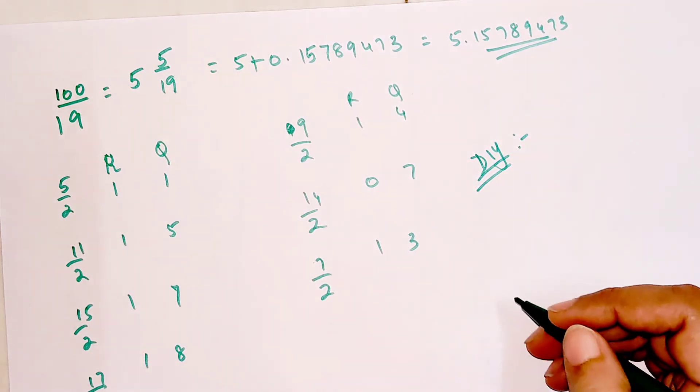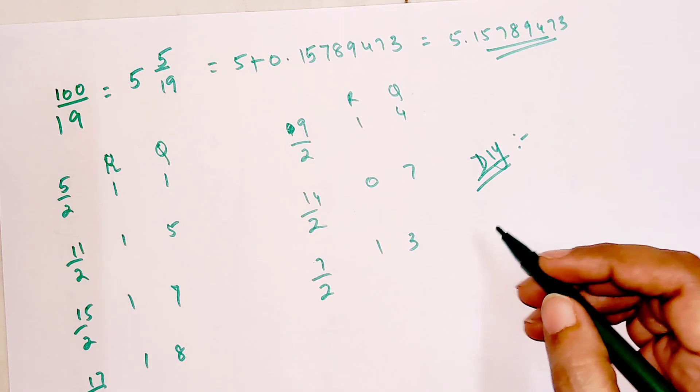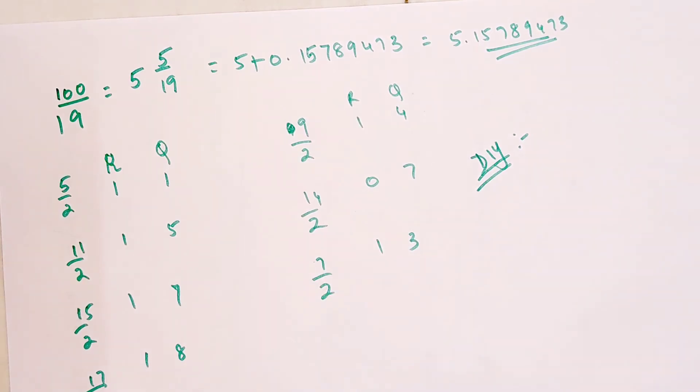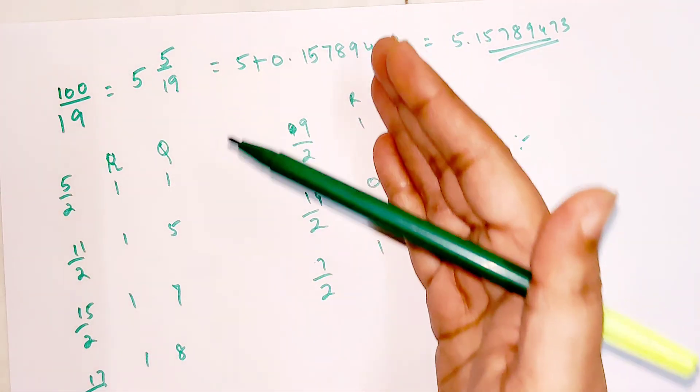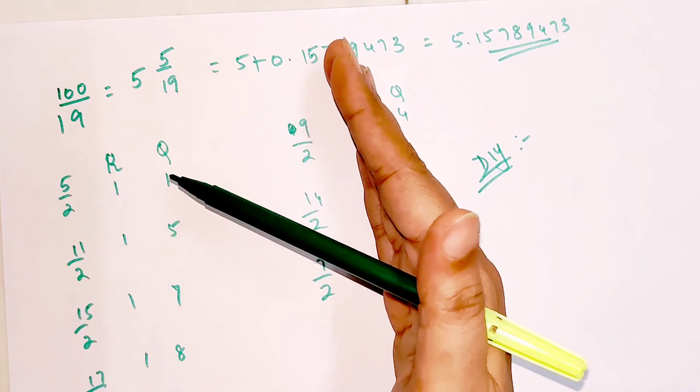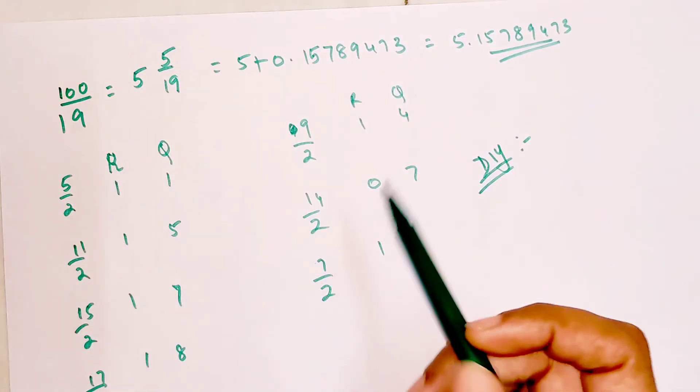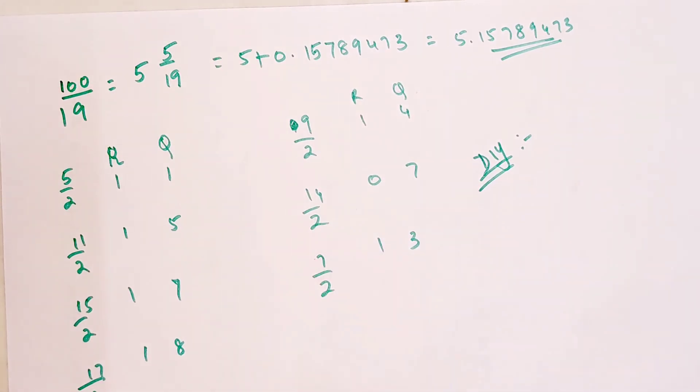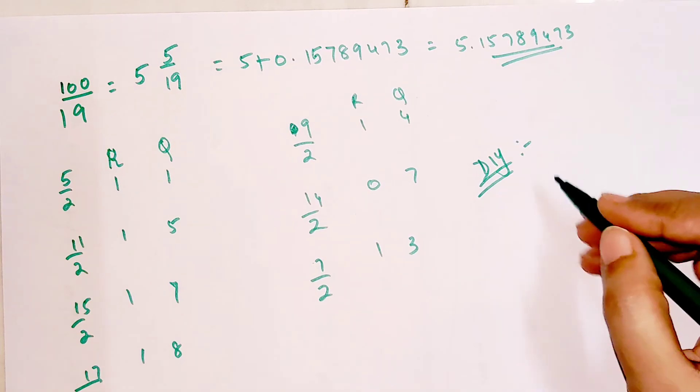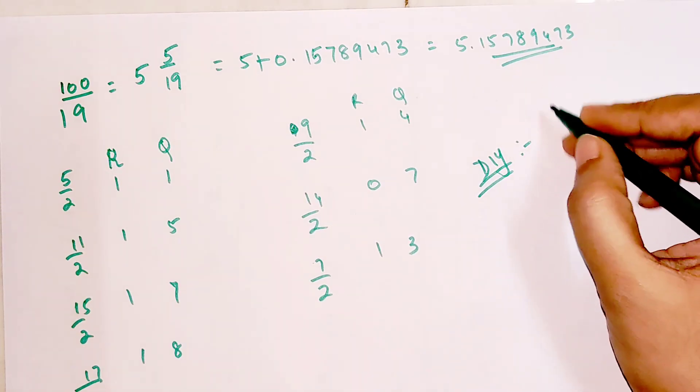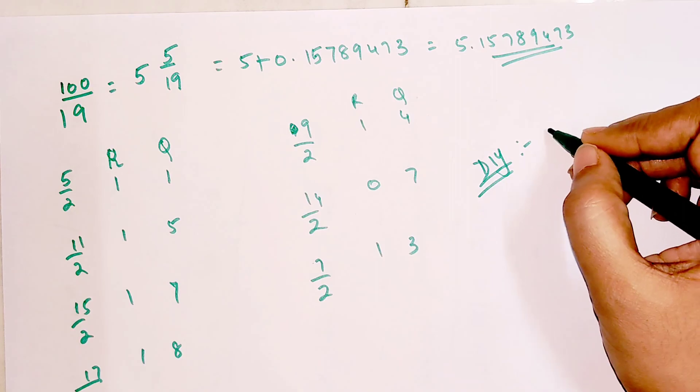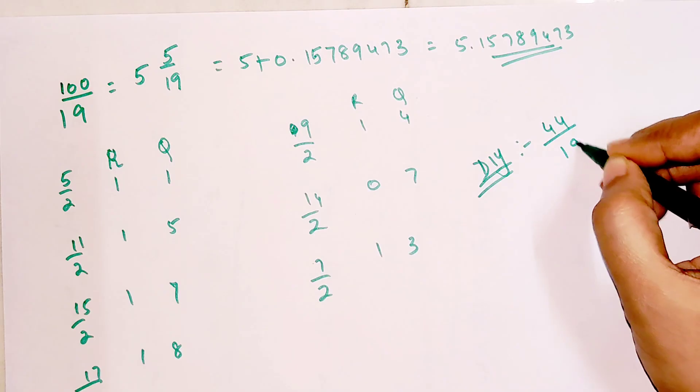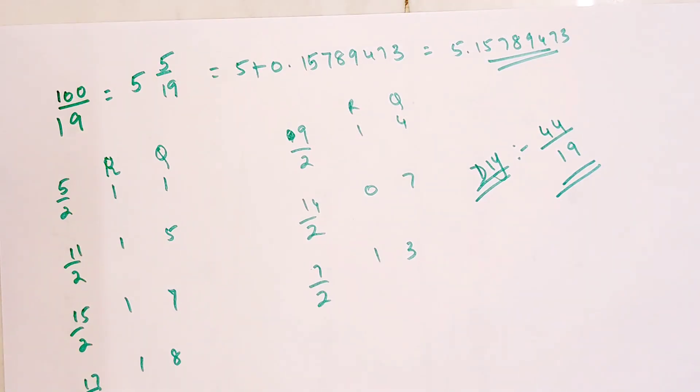If you write the other way around, your number changes to 41 instead of 14, and that's not what you want. That will be a grave mistake. For DIY, I want you to tell me what is the answer of 44 divided by 19. Let me know your answers in the comment section. That's it for today, I'll see you in the next video.